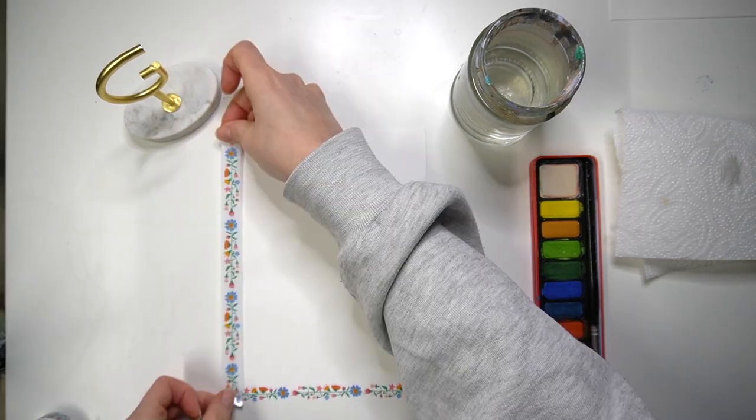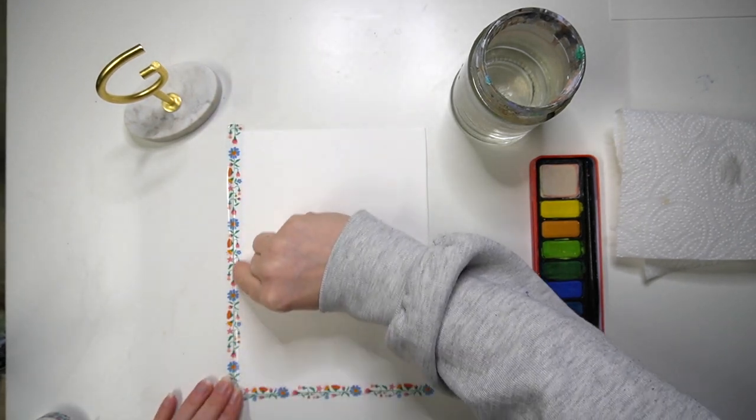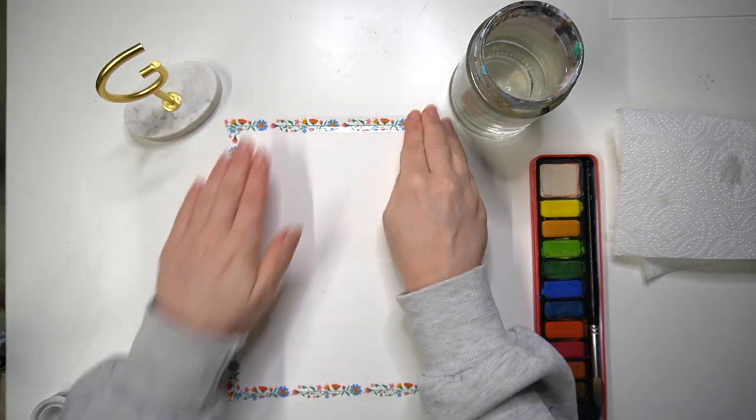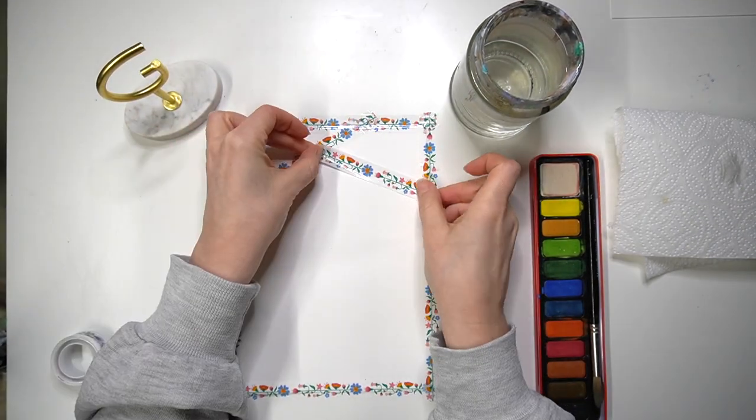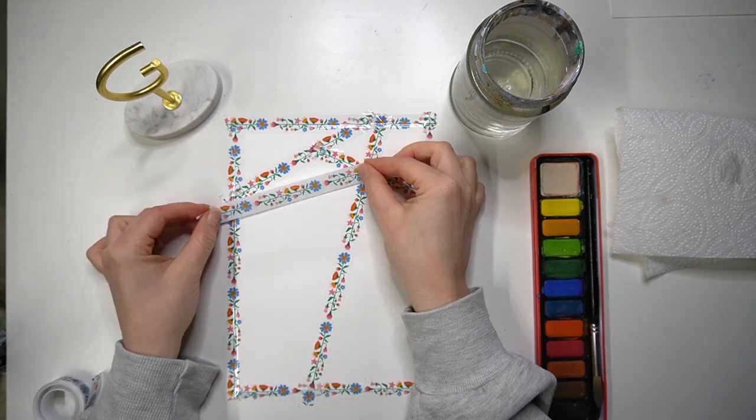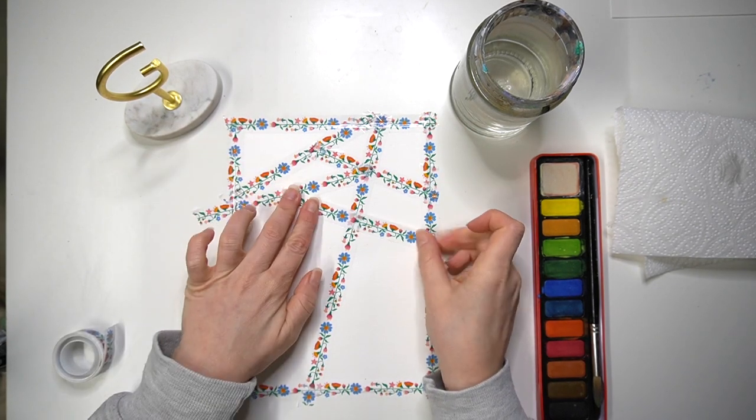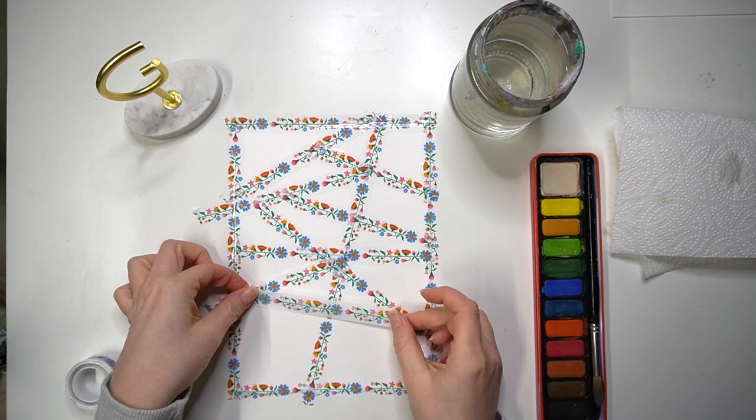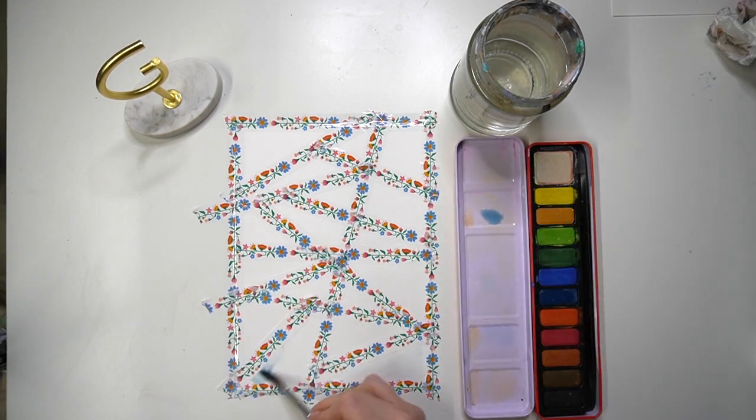This one is a really good one for getting nice clean lines in between your watercolour work. I'm going to start by dividing up my page with my washi tape to create some interesting shapes across my page. You can do these in any direction that you want to create interest on your work.